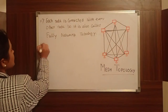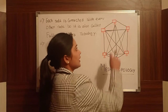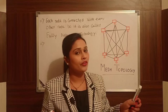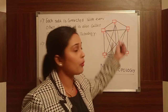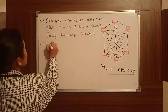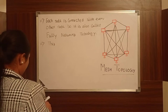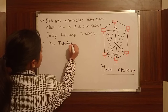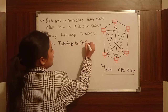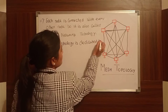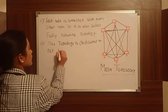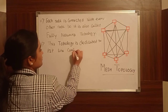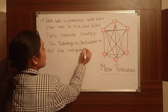So we will write the second point. The second point is that point-to-point line configuration is used. This is the point-to-point line configuration.